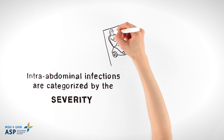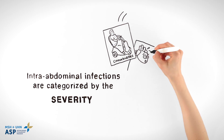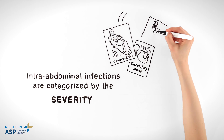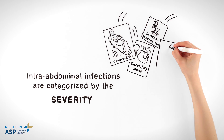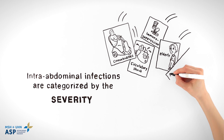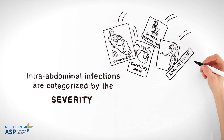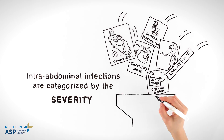Severe disease can involve comorbidities, shock, immunosuppression, older age, an APACHE 2 score of more than 15, and organ dysfunction.